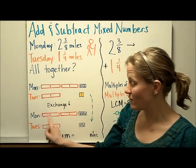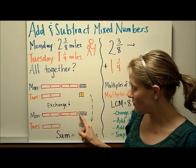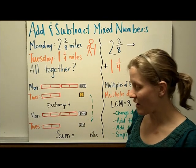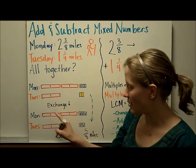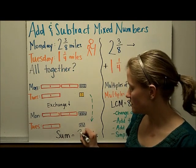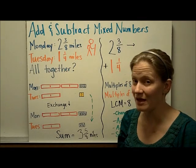Now you can add the wholes and add the fractions. Let's start with the fractions. I see 1, 2, 3, 4, 5 eighths, and I see 3 wholes. So these two mixed numbers together equal 3 and 5/8.